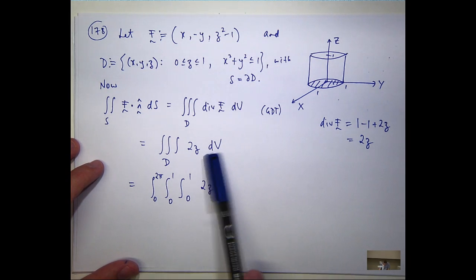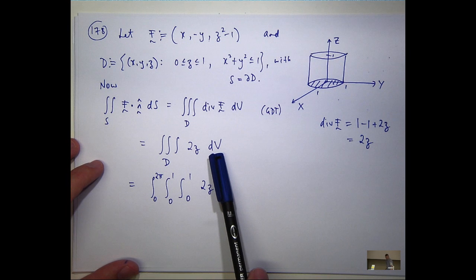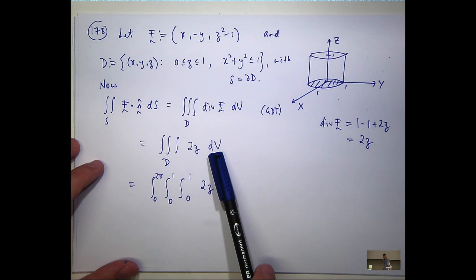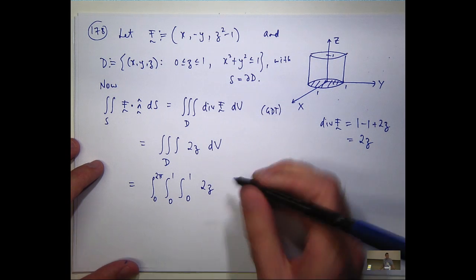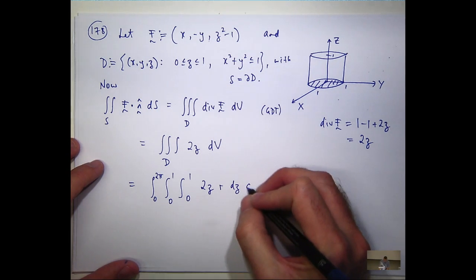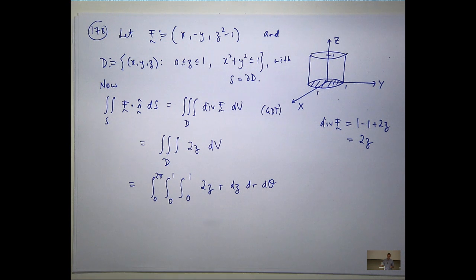Now, what do I replace the area of the volume element with dv? Anyone remember? Almost. Right. r dz dr d theta. So now all I need to do is evaluate this repeated integral.